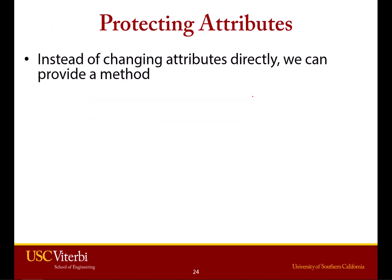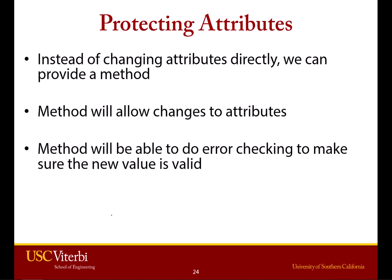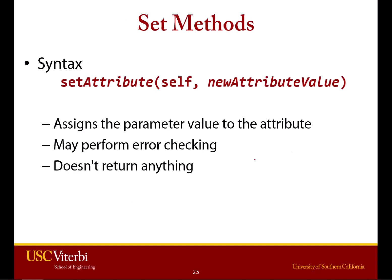One way to do it is instead of changing an attribute directly, we're going to provide a method that the user has to use to change the value, and then we can provide some logic. If the method is used, we'll be able to do error checking to make sure that the values are correct. We sometimes call this a set method, or a setter, or a mutator — meaning we are setting the value of a variable. These are pretty standard; they'll usually look something like set attribute, with self and the new value you want to change. The most simple level of a set method won't return anything either.